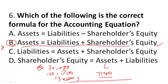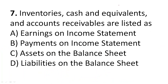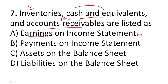Question seven: inventories, cash and equivalents, and accounts receivables are listed as what? Inventories are the stock you hold; cash and cash equivalents can be converted to cash shortly; and accounts receivable are payments you will receive. These are not income statement items — in an income statement you have expenses, revenue, profit and loss. The correct answer is option C — assets on the balance sheet. Accounts payable, on the other hand, would be liabilities.